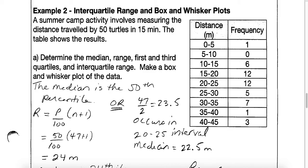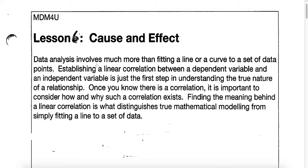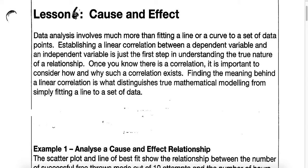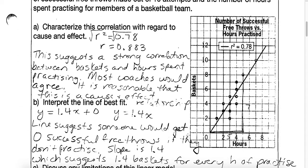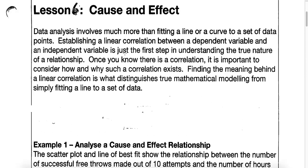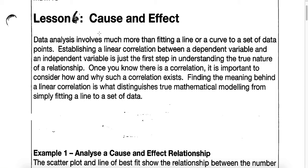So we're going to jump ahead to lesson six, which is now going to focus on looking at two different variables and graphs where we have an x-axis and a y-axis, and we are able to plot those two variables on one graph. We're looking at cause and effect. Usually when we graph a correlation, we have a dependent variable on the y-axis and an independent variable on the x-axis.